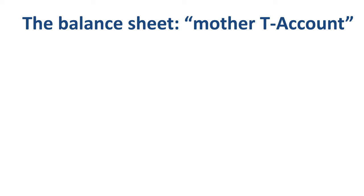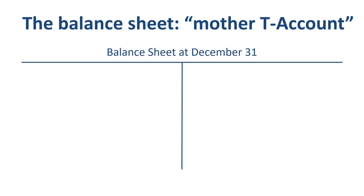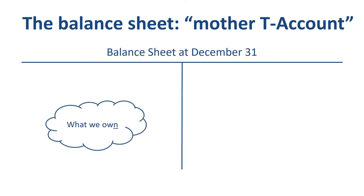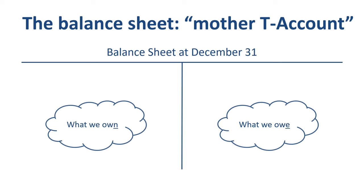A balance sheet is a picture at a point in time of what you own on the left hand side, and what you owe on the right hand side. What we own is called assets; what we owe is called liabilities.